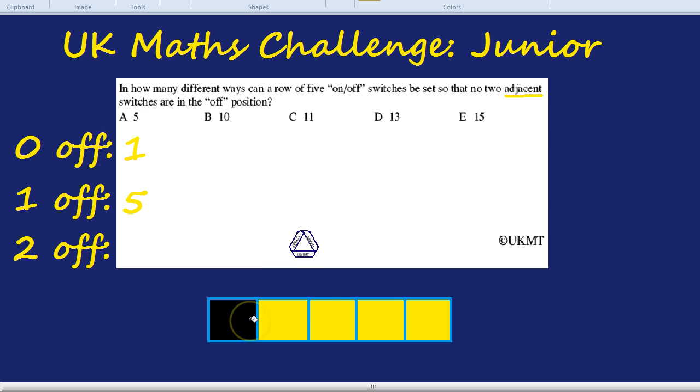Okay, if the first switch is off, can the second switch be off as well? Well, no, because that would mean there were two adjacent or two side-by-side off switches. So we can't have that. But the first switch being off and the third one being off, we can have. So that's one combination. The first switch and the fourth switch being off is another combination. That's two. And the first switch and the last switch being off is another combination. So that's three. Let's note that down.